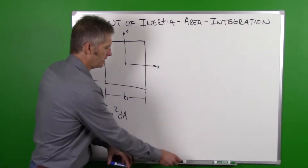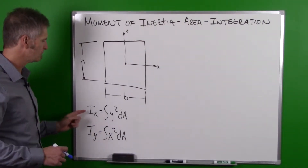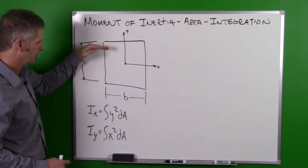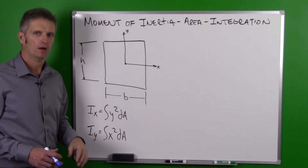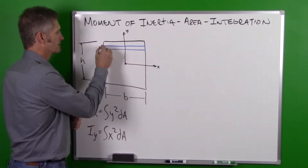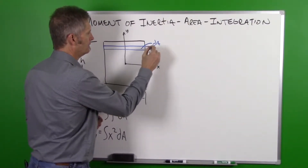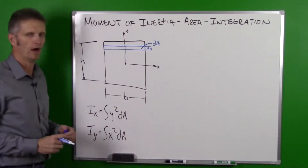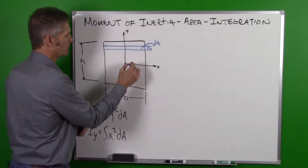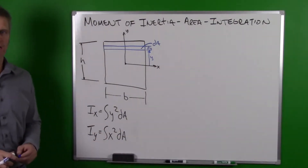We need to go through and calculate our dA. Let's go over Ix first. When we use Ix we have a y value, so we're going to select an area that is horizontal. This dA will have a height of dY, it goes the entire width of the object, and we measure our y distance from the x-axis up to it.